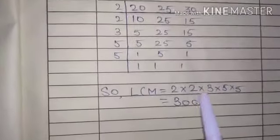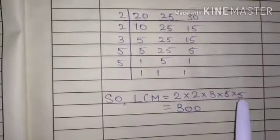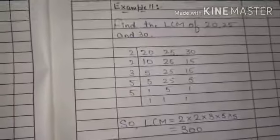2 × 2 × 3 × 5 × 5, 2 × 4, 4 × 3 is 12, 12 × 5 is 60, 60 × 5 is 300. It means 300 is the LCM.